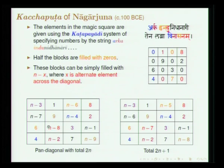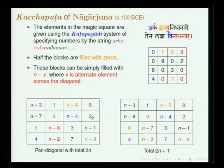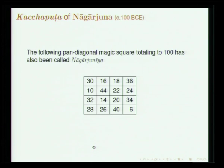Once you remember this mnemonic, you can construct a magic square for any desired sum. If you want the sum as 2n+1, all you need to do is use n−7 instead of n−8, appropriately filling the cells. The mnemonic pairs are: n−2 and 2, 6 and n−6, n−3 and 3 — diagonally placed. This magic square, whose sum is 100, is associated with Naga Arjuna and is called Naga Arjuniya, conveying the antiquity of this tradition.